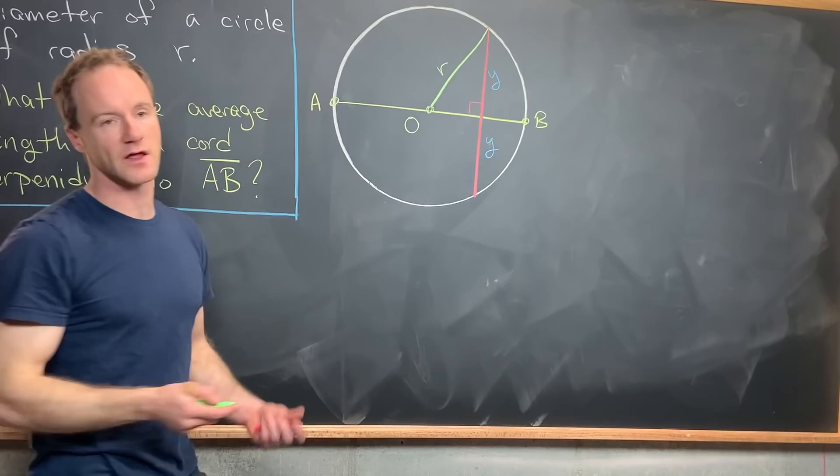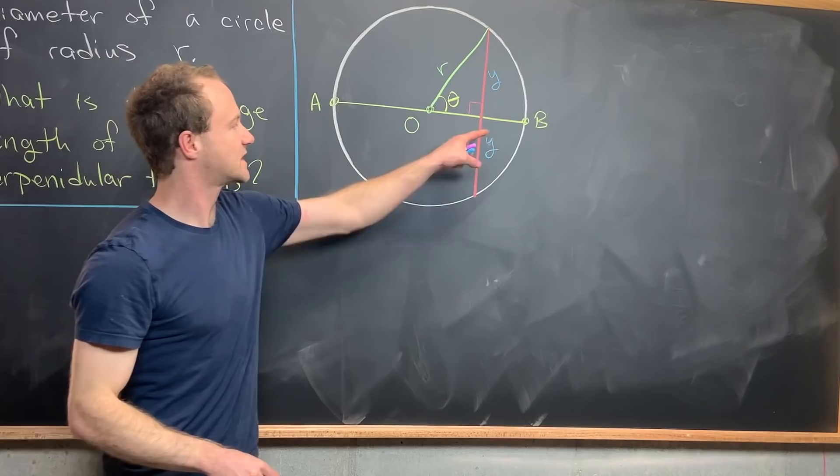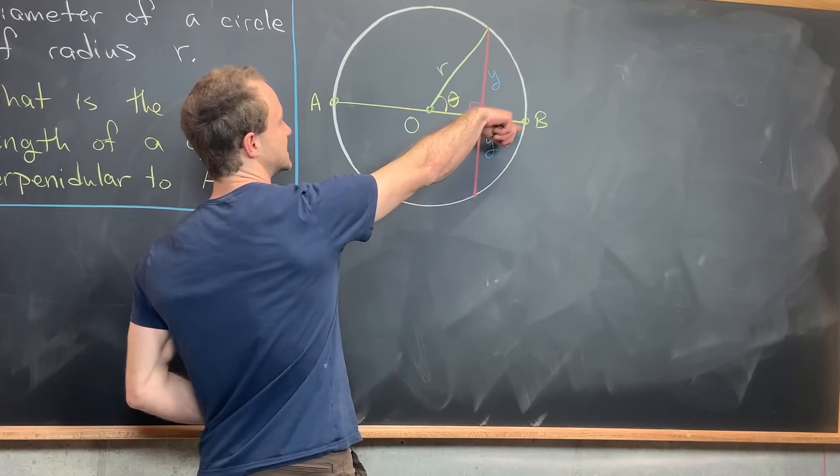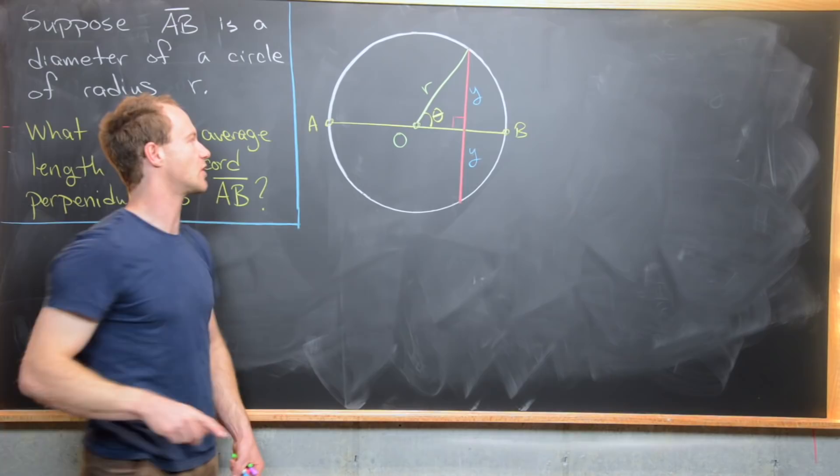And now the next thing that we can do is maybe label this angle right here theta. And then we want to notice that all such chords will be parametrized by this theta as theta runs from 0, which would be kind of like the chord of length 0 over here, up to theta equals pi, in other words 180 degrees, which would be the chord of length 0 going through the point A. In other words, this tangent line right here.